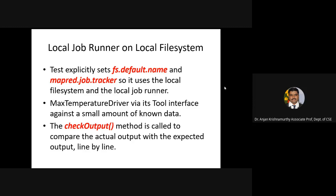The two classes 'fs.default.name' and 'mapreduce.job.tracker' represent items under local file system and Local Job Runner respectively. When using the MaxTemperatureDriver via this tool interface with a small amount of known data, this restricts the entire output to the local file system. There is also a 'checkOutput' method which shows the actual output of an expected line — similar to using a printf statement inside a loop to check a variable's value. This checkOutput method does the comparison with the actual output line by line.